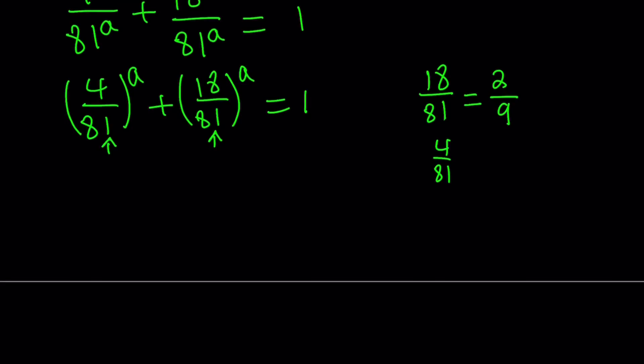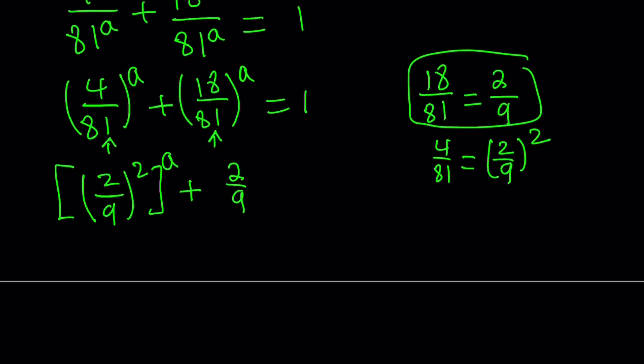So this turns into 2 over 9, and notice that 4 over 81 is 2 over 9 squared, which is kind of cool, right? So we have the following: 4 over 81 can be written as 2 over 9 squared, but then I have to raise it to the power a. And then 18 over 81 can be written as 2 ninths, and then raise it to the power a equals 1.